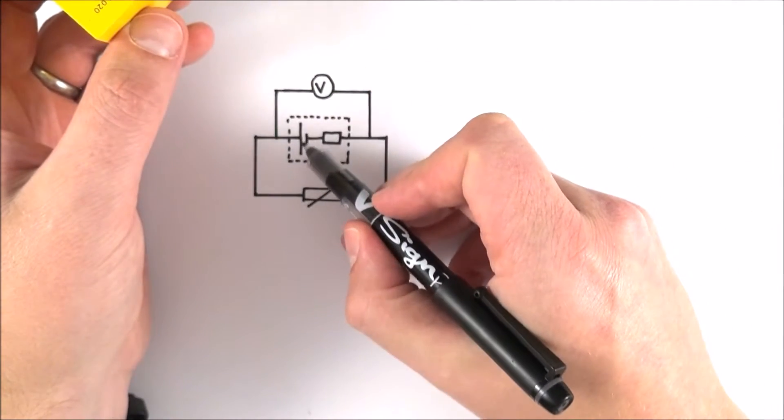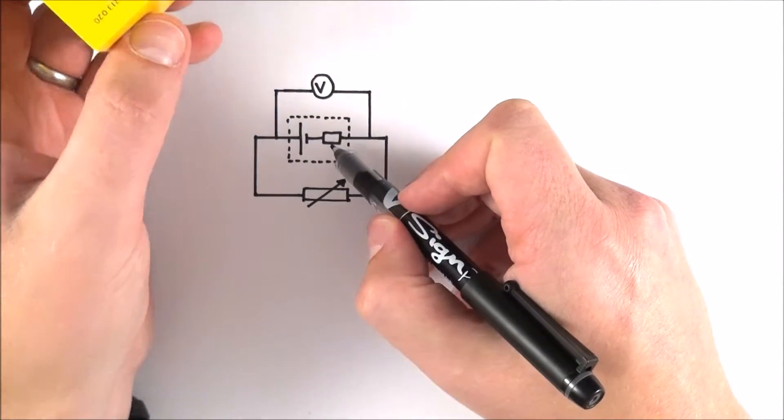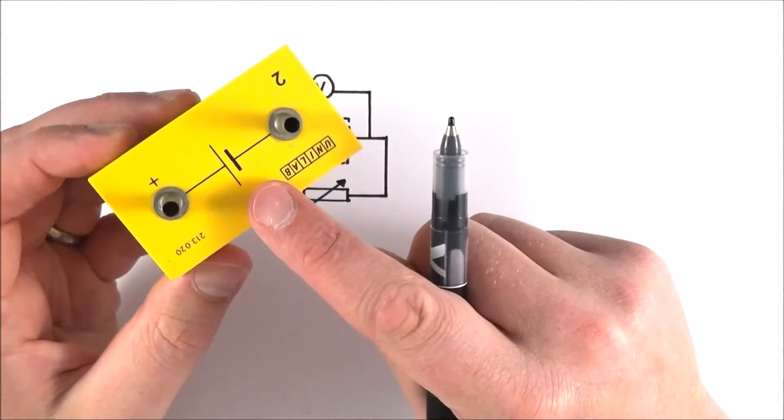You set up a circuit a bit like this. What I've got here is my cell, and this looks like a small resistor, but that's just showing that there is actually an internal resistance of this component.